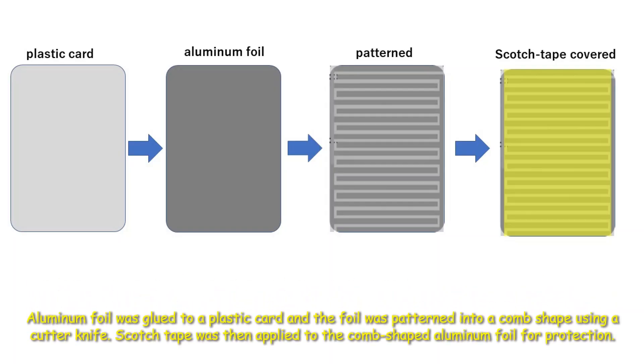Aluminum foil was glued to a plastic card and the foil was patterned into a comb shape using a cutter knife. Scotch tape was then applied to the comb-shaped aluminum foil for protection.